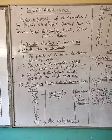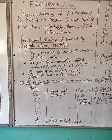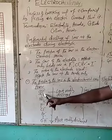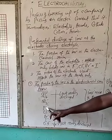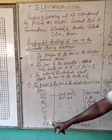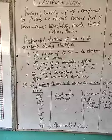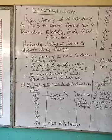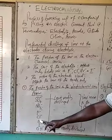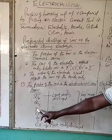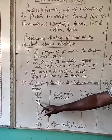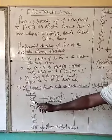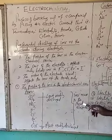Let us look at the first factor — the position of the ions in the electrochemical series. For anions, we have sulfate at the top, then nitrate, fluoride, chloride, bromide, iodide, and hydroxide. Hydroxide ions are the most readily discharged compared to other ions, followed by iodide, bromide, chloride, and fluoride. Nitrate and sulfate will never be discharged at any given time.